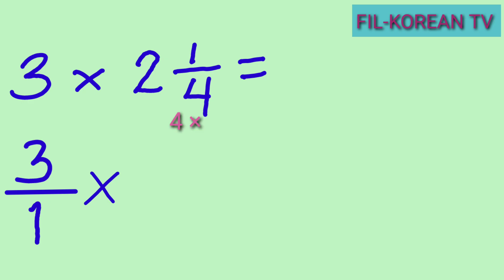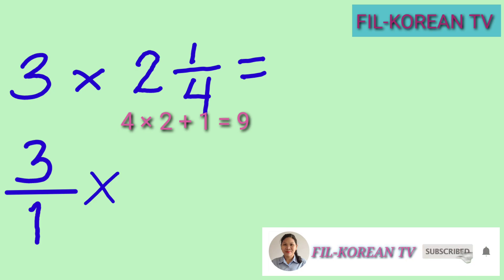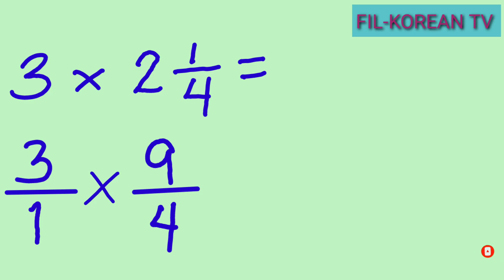Then change the mixed number to improper fraction by multiplying the denominator and the whole number, and then add the numerator to get the new numerator. Four times two equals eight, plus one equals nine. Nine is the new numerator, and we copy the denominator four.